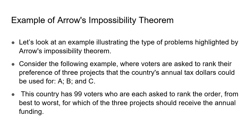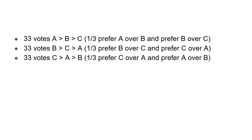Let's look at an example of Arrow's Impossibility Theorem. Voters are asked to rank their preferences and are given three projects: A, B, and C. The country has 99 voters who are asked to rank the projects from best to worst. Thirty-three of them rank A > B > C, preferring A over B and B over C. Another 33 rank B > C > A, preferring B over C and C over A. The remaining 33 prefer C over A over B.